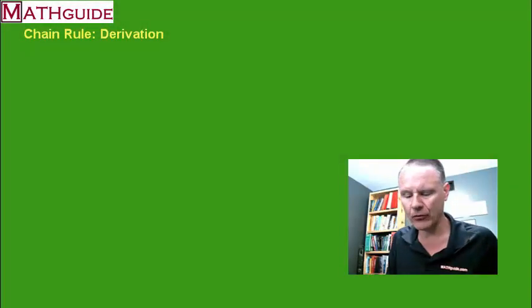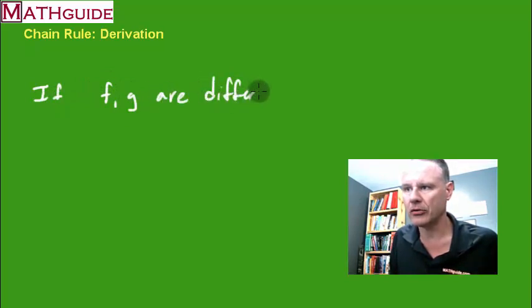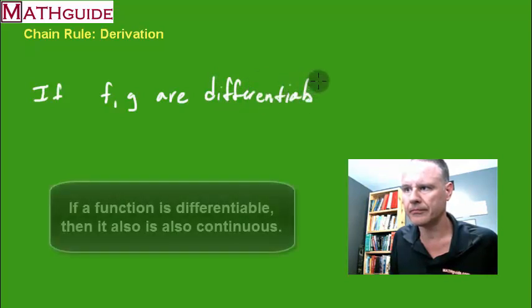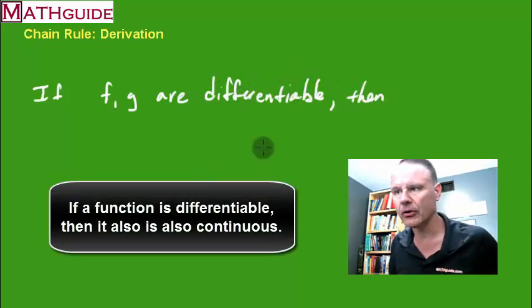Let's talk about the chain rule. What does the chain rule say? The chain rule says if two functions f and g are differentiable, remember that if two functions are differentiable, they're also continuous.